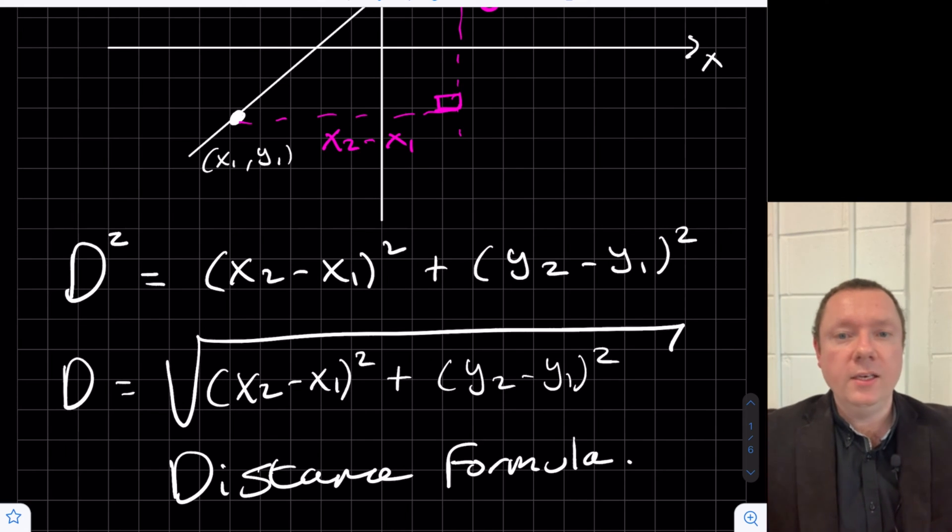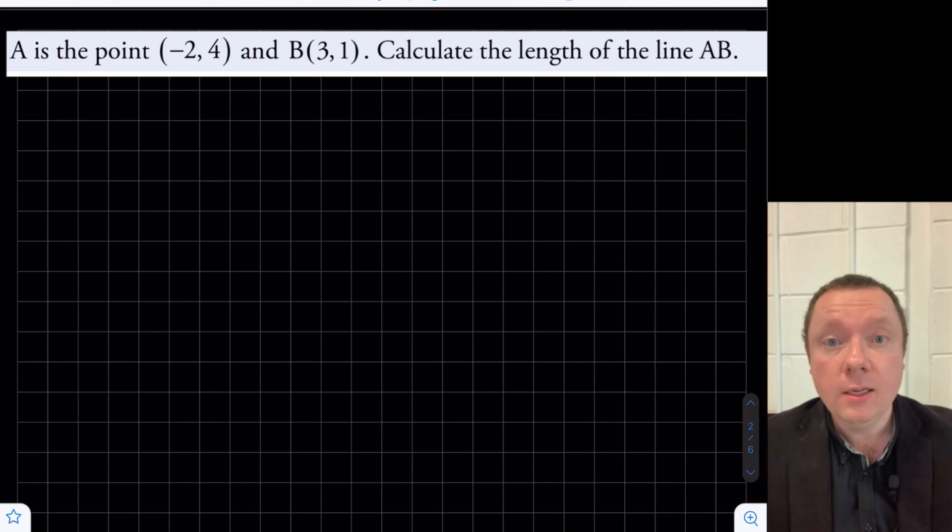So whenever you've got to find the distance between two points, you can either remember this formula and use it, or you can construct a right-angle triangle and just work out your distances and use Pythagoras, your choice. Okay, example one.